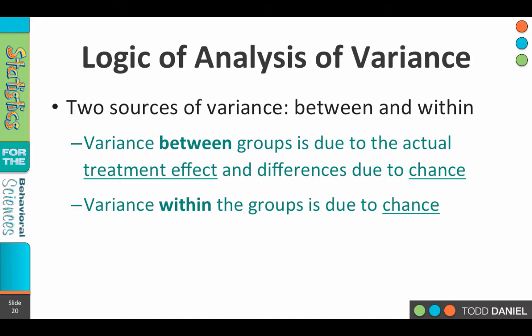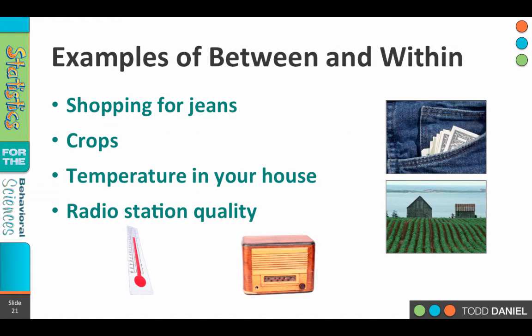Within the groups, that variability can be explained solely by error or chance. And what we're going to do is come up with a formula that allows us to divide the variance between by the variance within, canceling out the effects of chance, leaving us with just the variance between being due to a treatment effect.